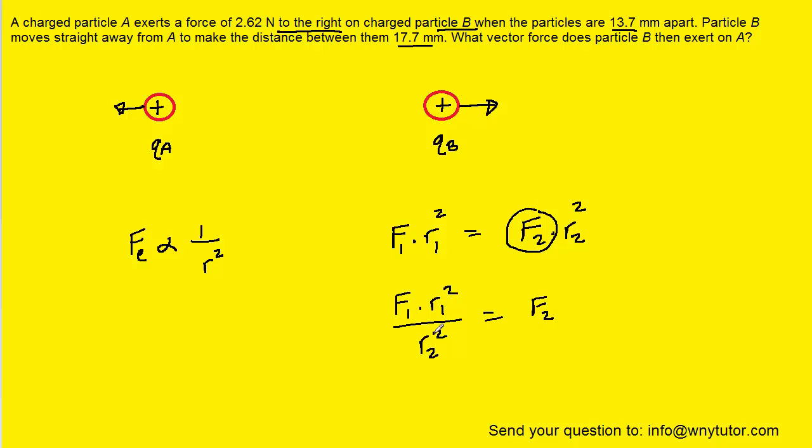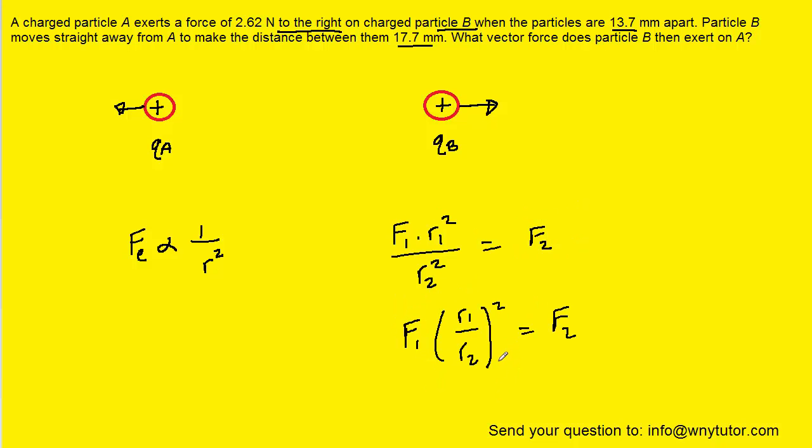And if we want next, we can get a little fancy algebraically and rewrite the squares as R1 over R2 and that entire quantity squared. So it would look like this. So now that we have isolated F2 and written it in a convenient form,